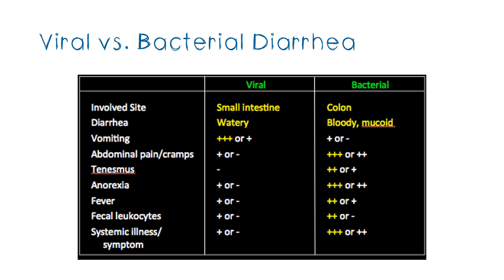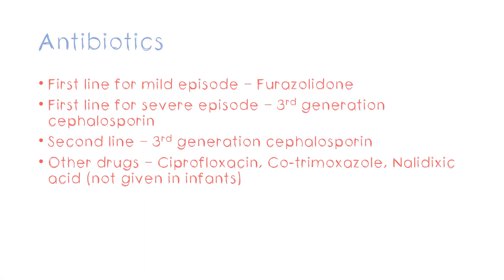For antibiotic treatment of bacterial diarrhea: the first line for a mild episode is furazolidone, taken orally, which directly acts inside the intestine to destroy bacteria. For severe episodes with systemic involvement, you can give a third-generation cephalosporin like cefotaxime or ceftazidime. Other drugs are also available. Note that nalidixic acid is not given in infants because it may cause benign intracranial hypertension.